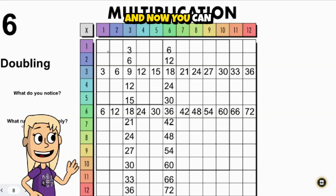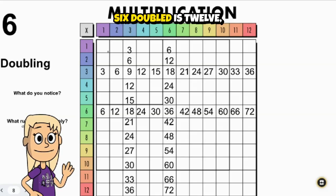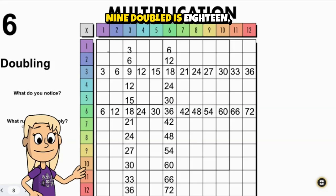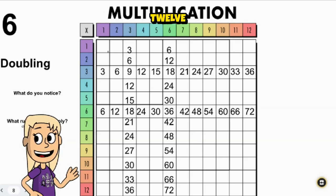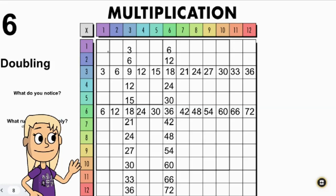And now you can see like three doubled is six. Six doubled is 12. Nine doubled is 18. Twelve doubled is 24. And so on. That's how we get our sixes.